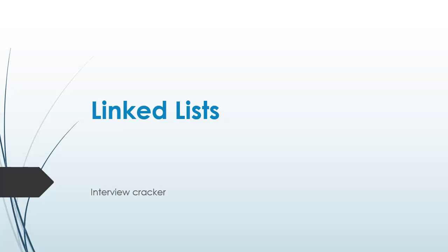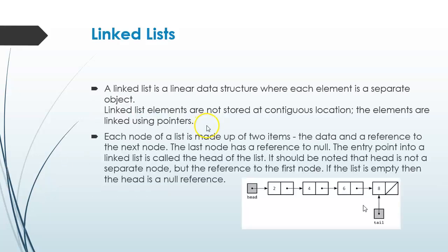A linked list is a linear data structure where each element is a separate object. Linked list elements are not stored at contiguous locations — the elements are linked using pointers. Each node of a list is made up of two items: the data and a reference to the next node. The last node has a reference to null.